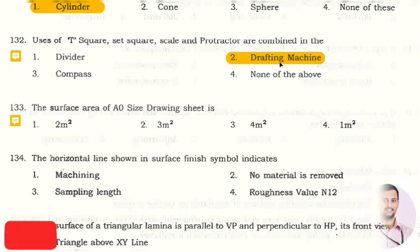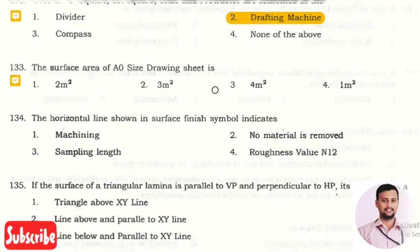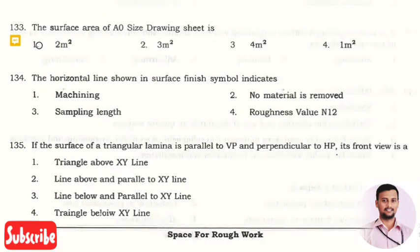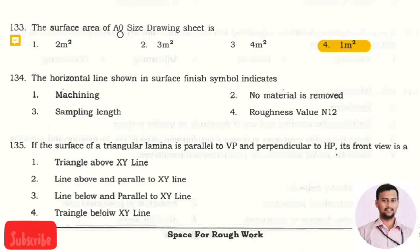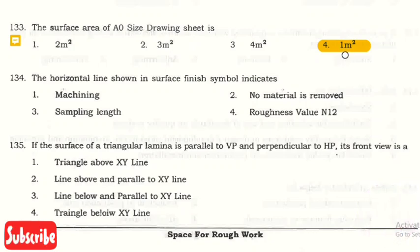The next question is: the surface area of A0 size drawing sheet is? The right answer is option four, that is one meter square. And this question is asked a couple of times in the diploma CT. So the surface area of A0 size drawing sheet is one meter square.